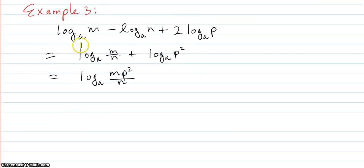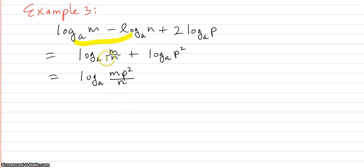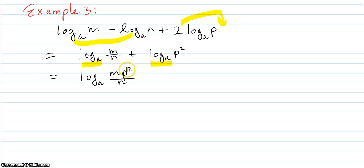Example 3: log base a of m minus another log plus another log — get it all as a single log. Rewrite the first two as log base a of m over n, then use the power rule to bring the 2 back up as an exponent. Now with the same base you can add those together, contracting the sum to a multiplication: log base a of m times p squared over n — a single log statement.